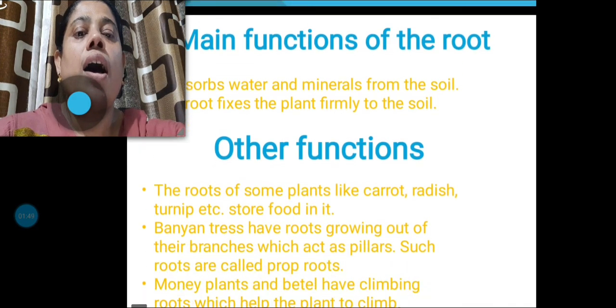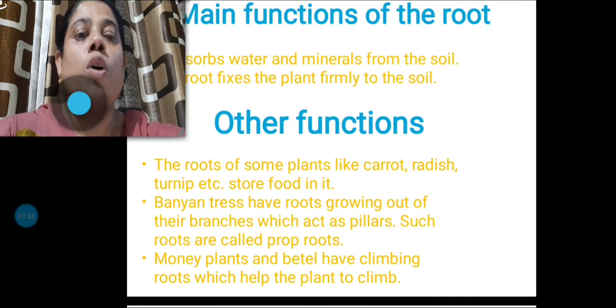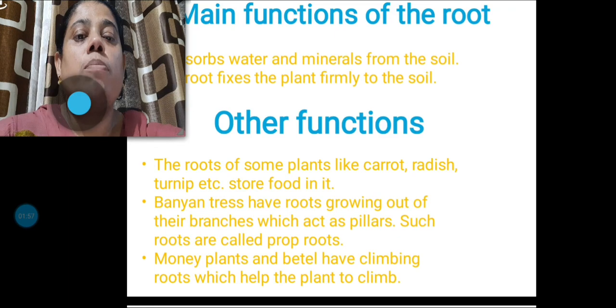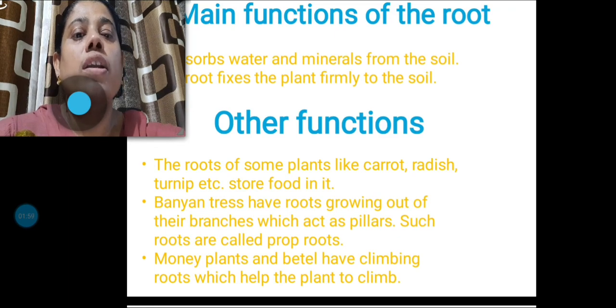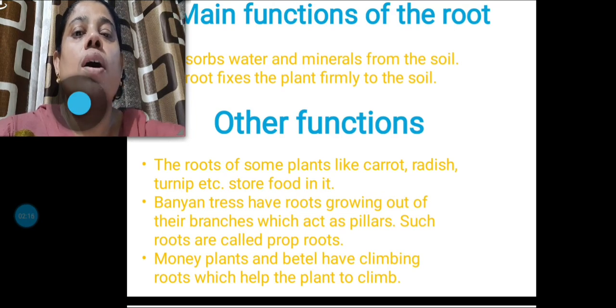And what are the other functions? The roots of some plants like carrot, radish, turnip etc. store food in it. Banyan trees have roots growing out of their branches which act as pillars. Such roots are called prop roots. Money plants and betel have climbing roots which help the plants to climb.